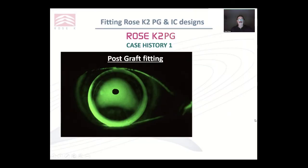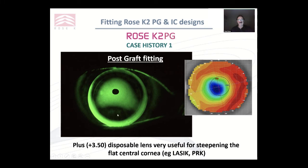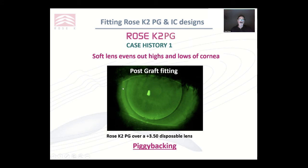Just a couple of case histories before we move to the IC design. This was a case where no matter what I did, even with my post-graft lens, I ended up needing to go steeper to get over one area, but that would make another area worse. What I decided to use was a plus 350 disposable lens underneath this lens to reduce the pooling and protect that area. As you can see, this resulted in a much better looking fitting pattern and an excellent result. So if all else fails and you don't want to go to a semi-scleral design, do think about piggybacking. The power of the disposable lens is significant in changing what is happening to that central cornea.